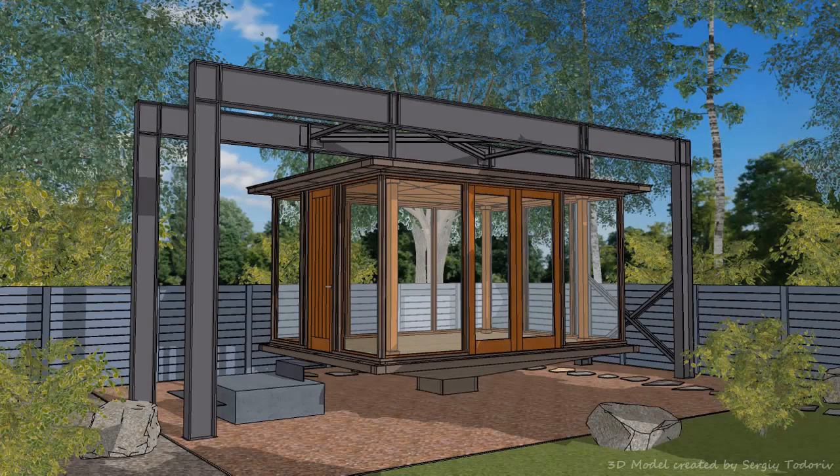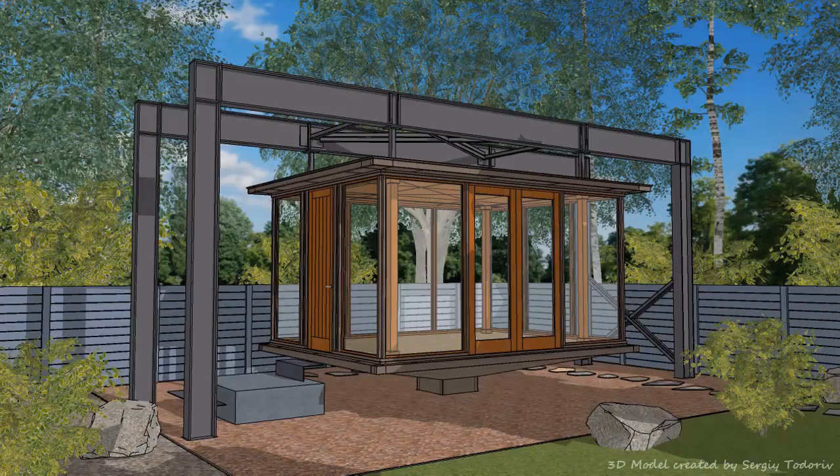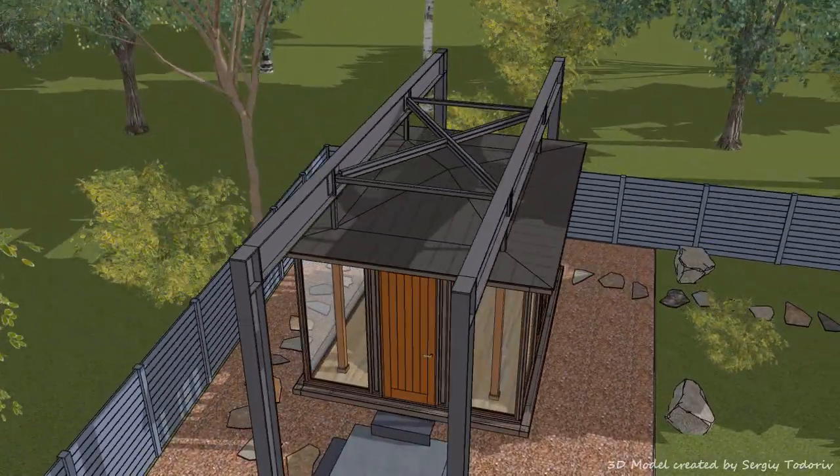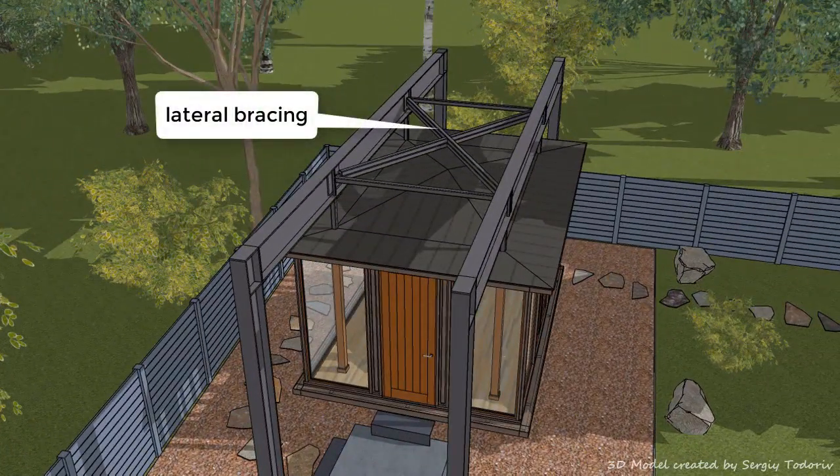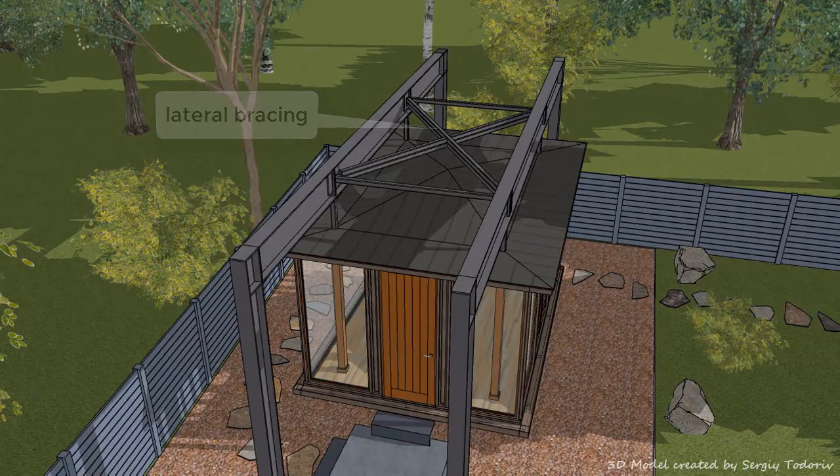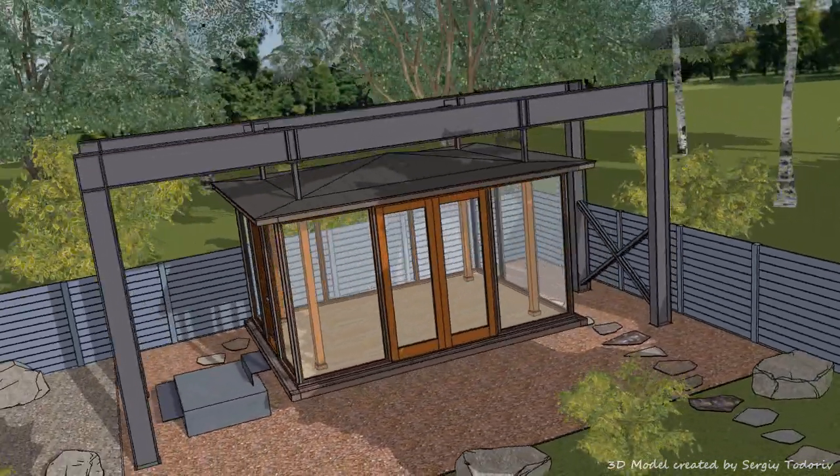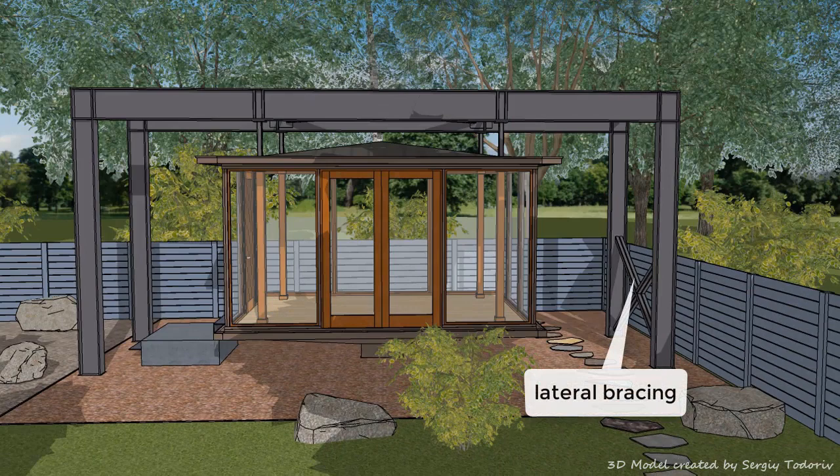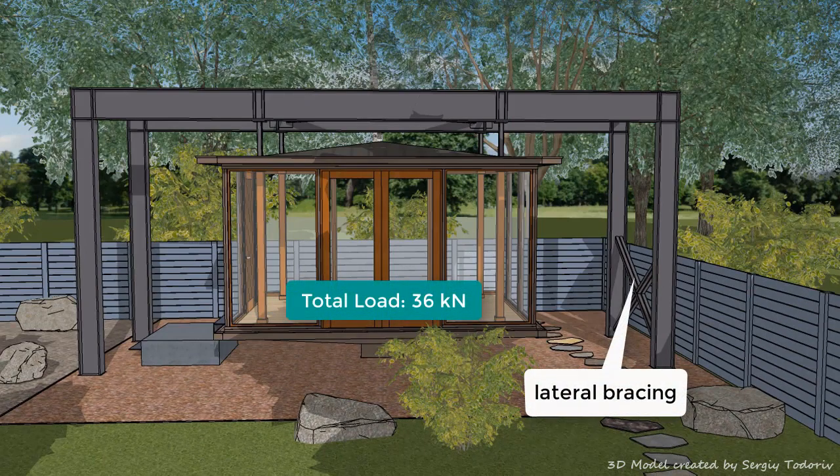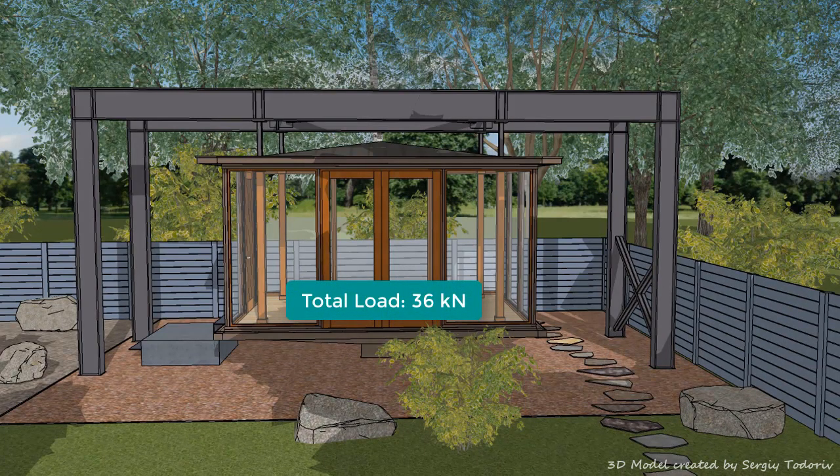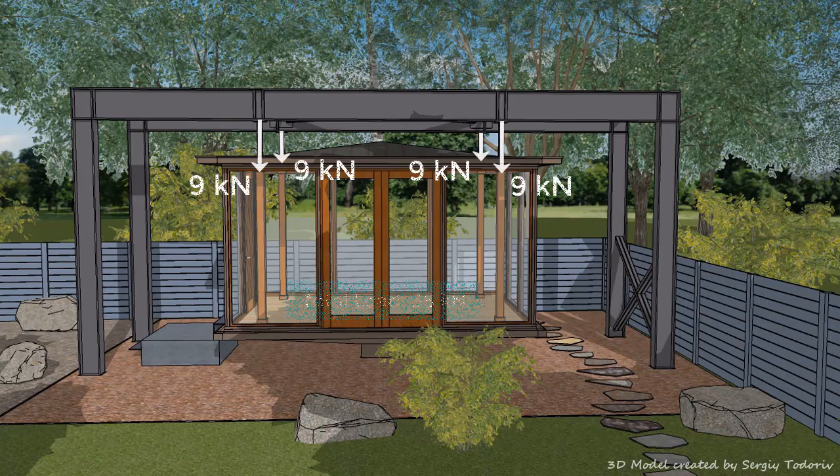The tea house hangs from two steel frames that are laterally braced at the top and aside for stability. The total weight to be supported by the frames is 36 kN, equally distributed among the four steel bars that connect the enclosure to the frames.